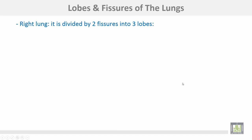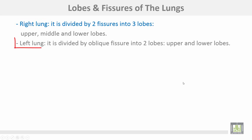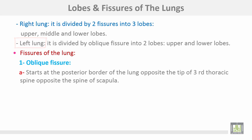Lobes and fissures of the lungs. The right lung is divided by two fissures into three lobes: upper, middle, and lower lobes. The left lung is divided by the oblique fissure — one fissure only — into two lobes: upper and lower.